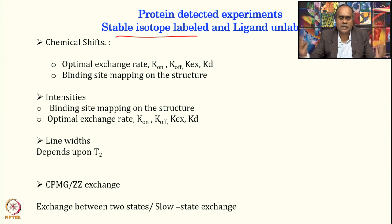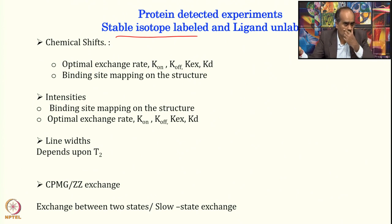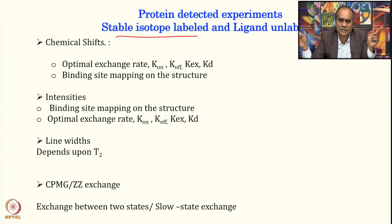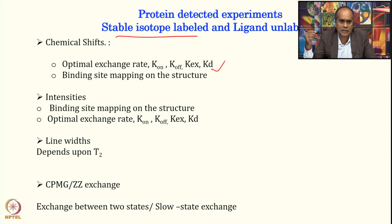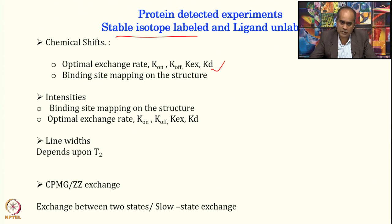The chemical shift of a protein may change upon binding, or intensity may change upon binding. Monitoring these parameters can report the on-rate of binding, the off-rate, the KEX chemical exchange, and using that one can get the KD of the ligand-protein binding. We can even find out the binding site on the structure: from where the chemical shift is changing, what residues are engaged in these interactions — that is what binding site mapping tells us. We are going to discuss this in detail.